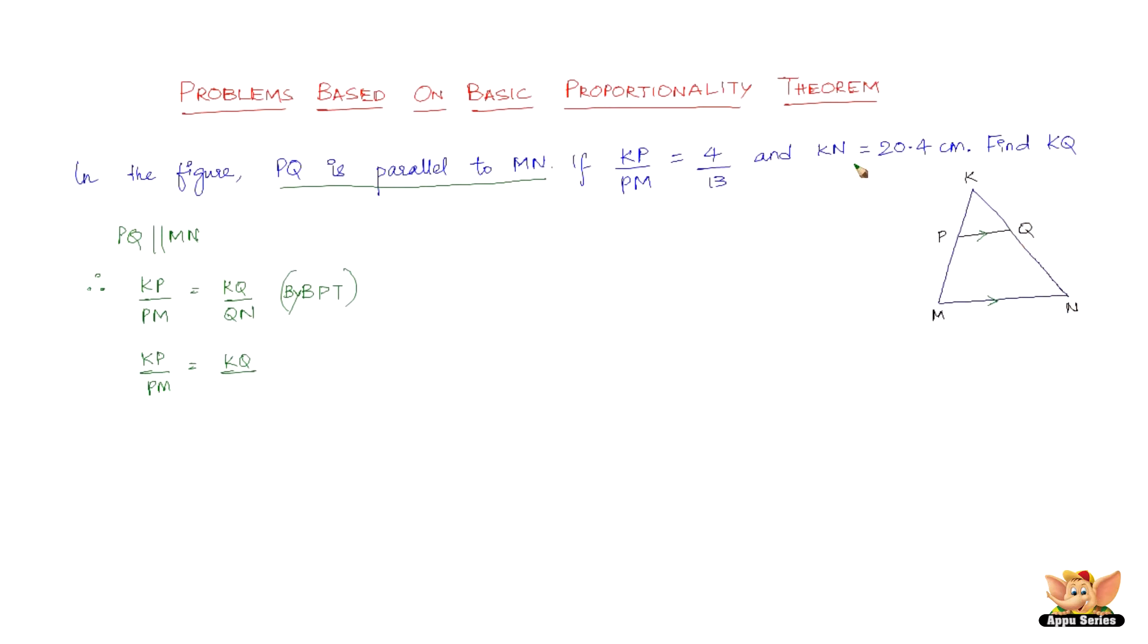Now, we've got KN. We've got to use that data. So QN can be written as KN minus KQ, because we need to use this. So we need to write QN in terms of KN minus KQ. So we've got KP/PM as 4/13 = KQ/(20.4 - KQ). It's pretty simple. It's a simple equation. We just have to solve for KQ.